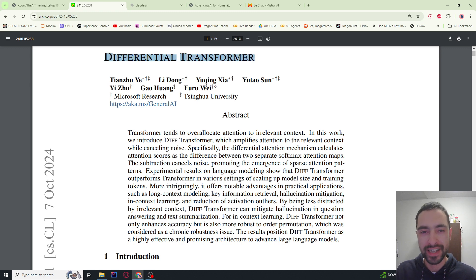A new differential transformer architecture reduces the model size by about 35% and the necessary training tokens by also about 35% while keeping the same performance. It does this by amplifying attention to relevant tokens in the context and cancelling out attention to the irrelevant tokens.